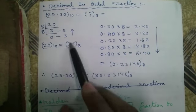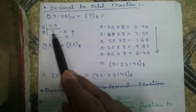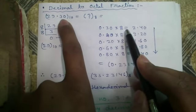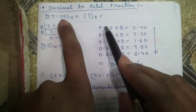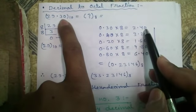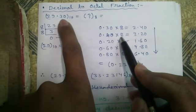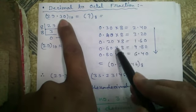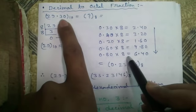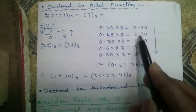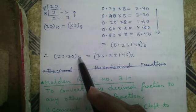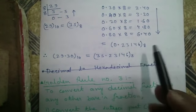Decimal to octal fraction: for the integer part, convert as usual. For the fraction part, same process but multiply by destination base 8. For 23.30: 0.30×8 = 2.40; 0.40×8 = 3.20; 0.20×8 = 1.60; 0.60×8 = 4.80; 0.80×8 = 6.40. Reading downward: fraction is .23146. So 23.30 in decimal becomes 27.23146 in octal.